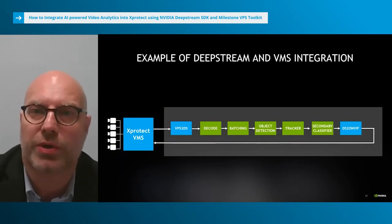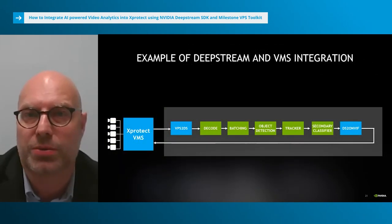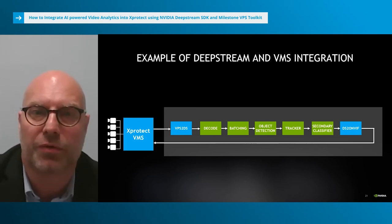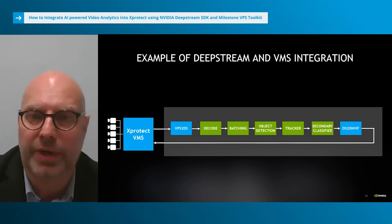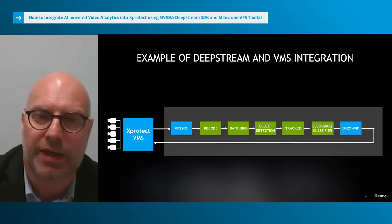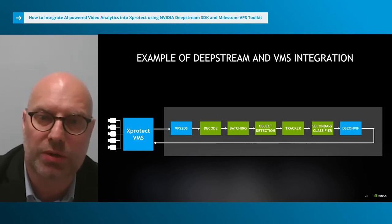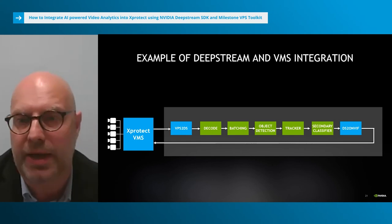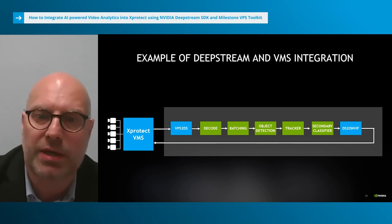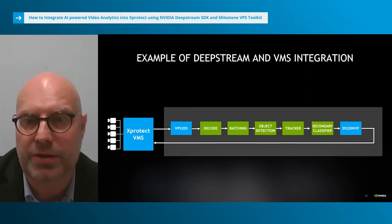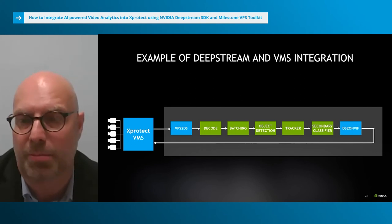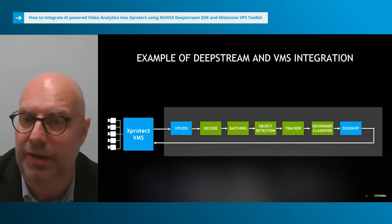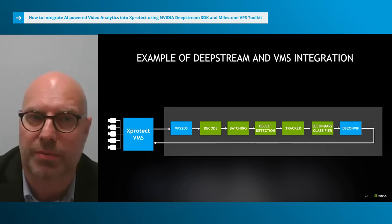This architecture shows how Milestone plugins are used in a DeepStream pipeline for video analytics. The connection to XProtect is done via the first Milestone plugin. The video stream is then processed as usual with decoding, preprocessing, etc. At the end of the pipeline, the second Milestone plugin sends the video stream plus the metadata resulting from the analytics back to the XProtect system.